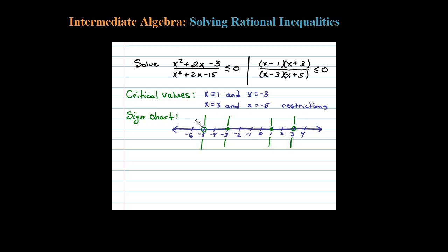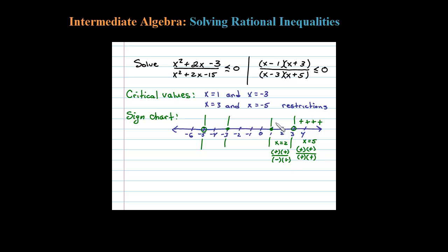This breaks the real number line into 5 regions. We have to test each region to see if the result is positive or negative. Choosing x equals 5: 5 minus 1 is positive, 5 plus 3 is positive, 5 minus 3 is positive, and 5 plus 5 is positive — all positive, so that region yields a positive result. Testing x equals 2: 2 minus 1 is positive, 2 plus 3 is positive, 2 minus 3 is negative, 2 plus 5 is positive — three positives and one negative yields a negative result.